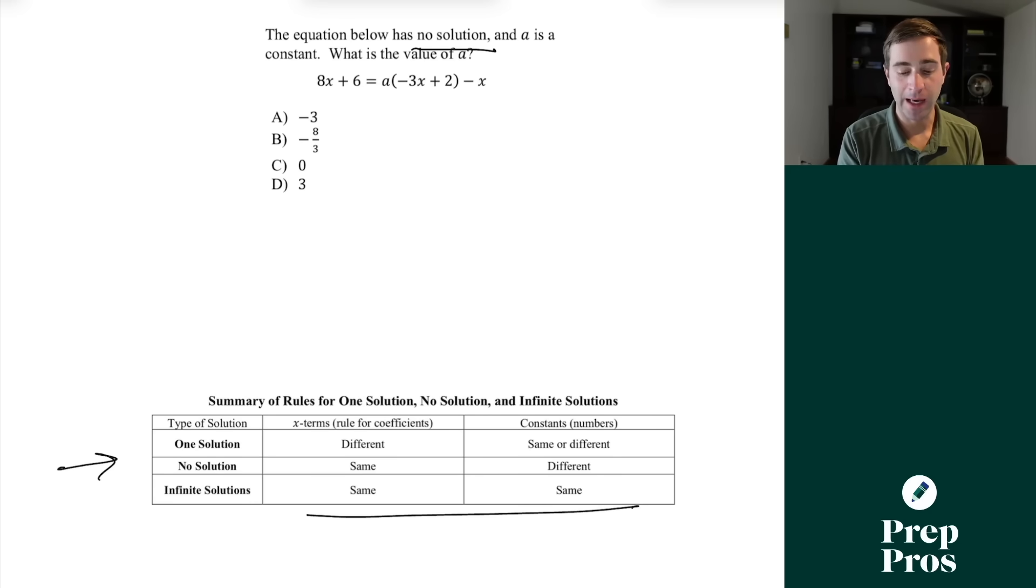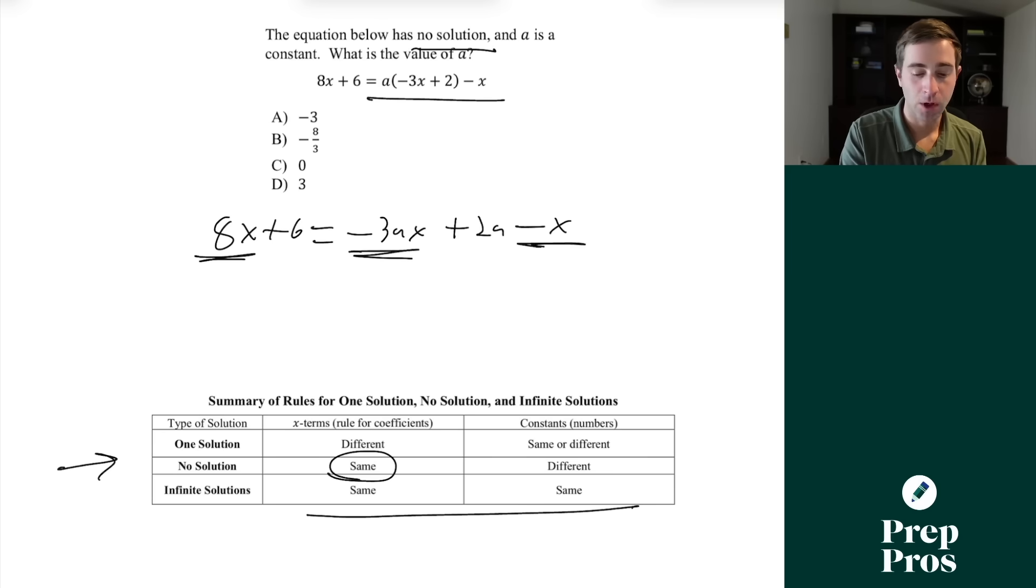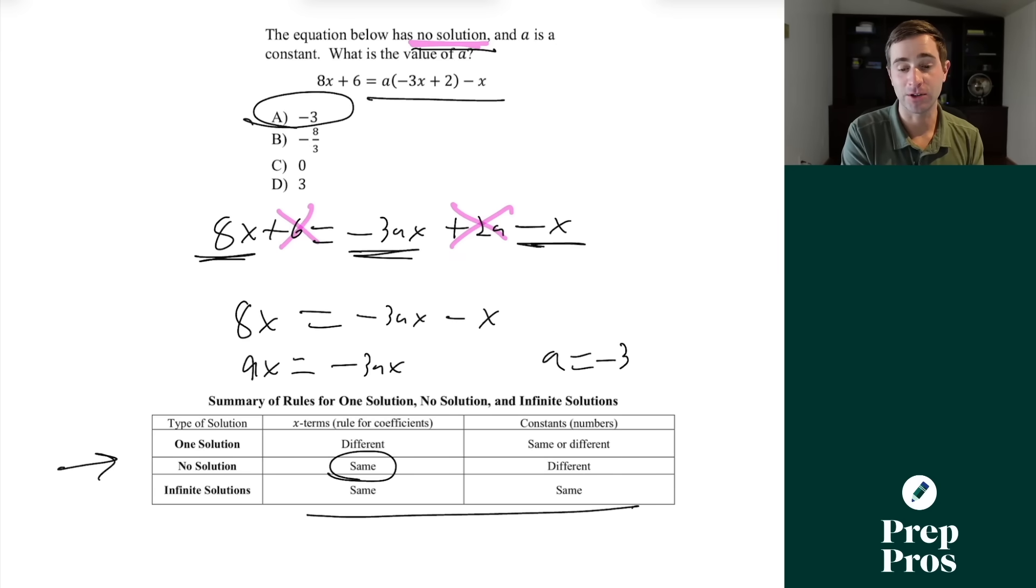So here, if we're saying the equation below has no solution, and a is a constant, what is the value of a? What this really means is the only thing that we care about being the same is our x terms or our slope. So we're going to distribute through the a, and we're going to get 8x plus 6 is equal to negative 3ax plus 2a minus x. And now the kind of tricky part is we only care about the x terms being the same. So as we work through, we're going to actually basically only pay attention to that. We're simply going to say 8x equals negative 3ax minus x. And now we can solve for a because we do not care about the intercepts here because the question has told us we have no solution, 2a just cannot equal 6. So now as we solve through, we're going to add over the x, and we'll get that 9x equals negative 3ax. We can divide both sides by negative 3x, and that will give us that a equals negative 3. And that will give us, funnily enough, the same number, but that will give us our correct answer of a here as well.